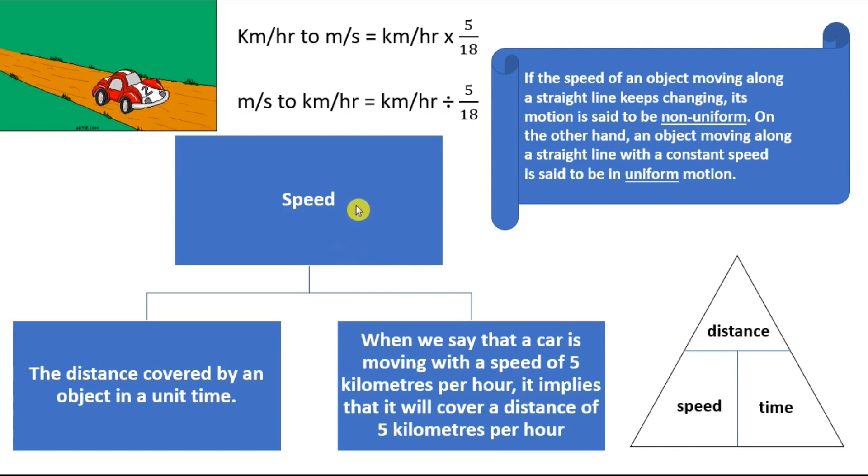Now, if the word motion comes in, then we also have the speed. What is the speed? The speed of the motion. At how fast or slow the object is moving in a particular motion. The speed is the distance covered by an object in a unit time. When we say that a car is moving with a speed of 5 km per hour, it implies that the car will cover a distance of 5 km in 1 hour.